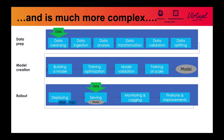When we look closer at each team, each of their steps could actually break down into multiple smaller steps. For data prep, you could do data cleansing, data ingestion, data analysis, transformation, validation, and splitting. The same thing applies to model creation where you need to build a model, optimize it, validate it, and then train at scale. From the production engineer perspective, you'll have to deploy, serve it, create monitoring, and then feed feedback back to data preparation steps. Each of these steps could be rerun and redone multiple times within the teams, and this process could be very repetitive over time. This is why having a pipeline system will really benefit multiple teams, and they can also share their knowledge across other teams within the organization.